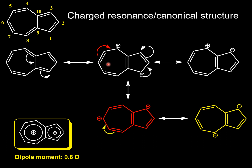Similarly, we can delocalize the positive charge which is developed in the 7-membered ring of azulene onto different carbons, and thereby we will have 2 more resonance structures which also have aromatic character. Now we have a total of 4 resonance structures where both rings attain aromatic character. Due to the dipolar nature of these resonance structures, azulene has a dipole moment of 0.8 Debye.